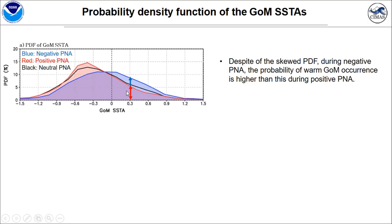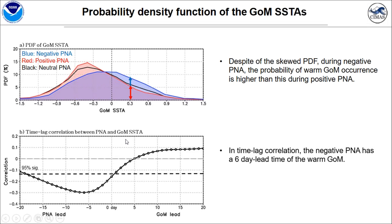We also investigated the probability density function of Gulf of Mexico SST during negative, positive, and neutral PNA conditions. The PDF during neutral PNA is skewed toward cold SST. But during negative PNA, the probability of warm Gulf of Mexico occurrence is higher than during positive PNA. For example, during negative PNA, we had double the chance of a 0.3-degree warming of Gulf of Mexico occurrence compared to during positive PNA.